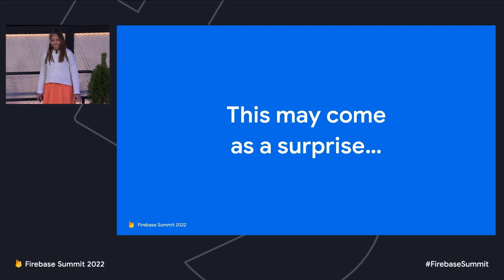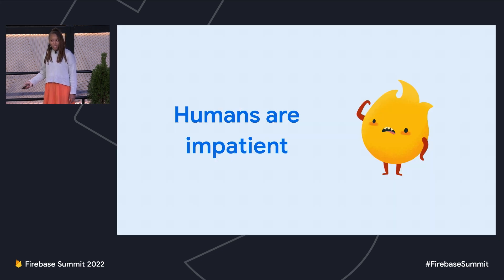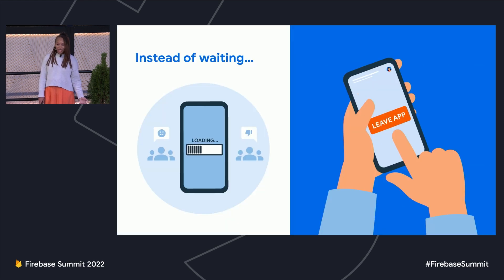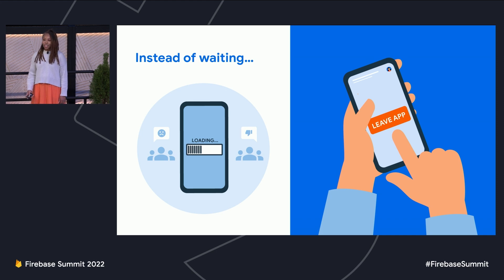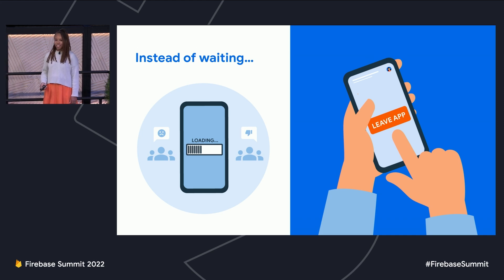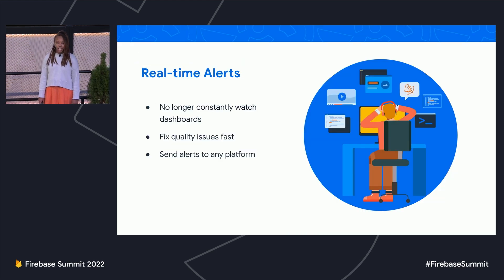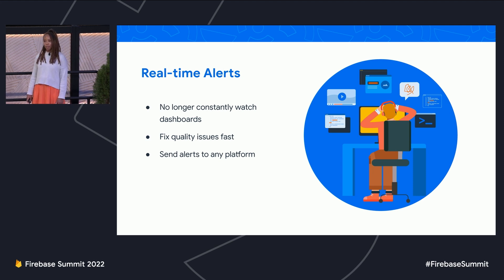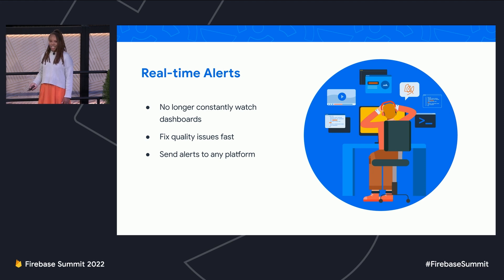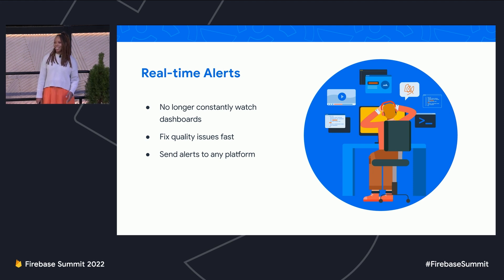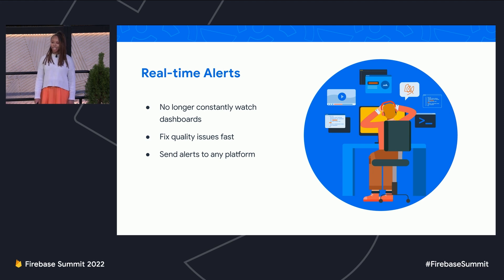This may come as a surprise to some of you, but humans are impatient. Instead of waiting for something to load that may be taking longer than usual, users often jump to an alternative option that serves a similar purpose. Development teams are moving fast and have limited time, so it's not always practical to watch Crashlytics and performance monitoring dashboards to catch every issue as soon as it happens. So how do we fix issues in our app before that impatient human steps in? With real-time alerts. Let's take a deep dive into a few advanced alerting use cases so that you can learn how to send real-time alerts to virtually any platform with any configuration you'd like outside of Firebase.